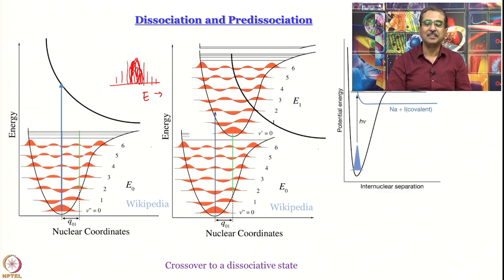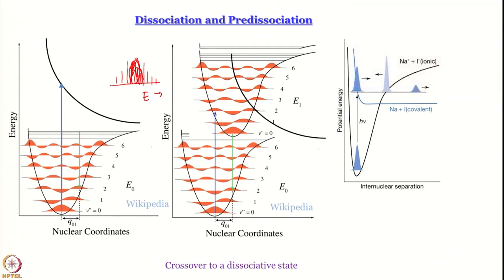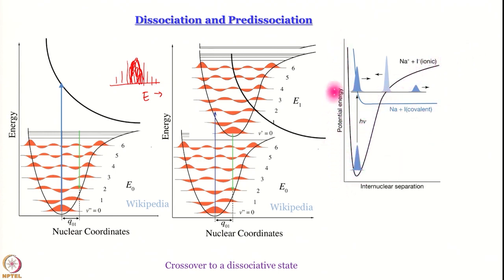The example is something we encounter every day in labs — the sodium flame test. We get the yellow flame for sodium even when we take Na+ I−, yet we get the characteristic spectrum of sodium atom. That is because — as shown in a figure from Atkins Physical Chemistry — the Na+ plus I− ionic state actually goes to a minimum, whereas the Na-I covalent state is dissociative. However, these two energy states cross.